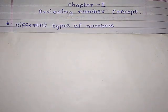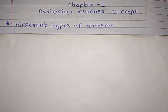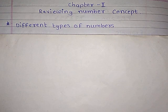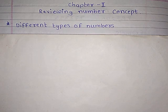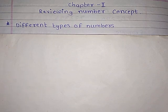Today we will start the first lesson of our syllabus, that is reviewing number concepts. In this chapter, we have to see different types of numbers. The first concept of the chapter is different types of numbers. All of you are familiar with natural numbers, whole numbers, integers, rational numbers, positive numbers, negative numbers, prime numbers, and so on. Now, in detail we will see all these number systems.